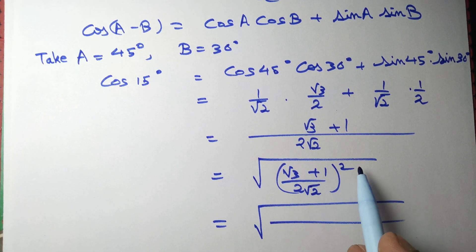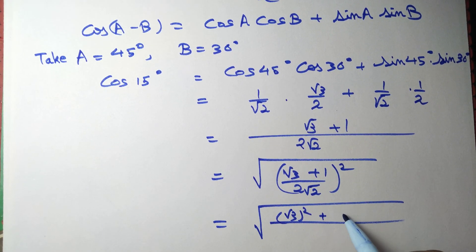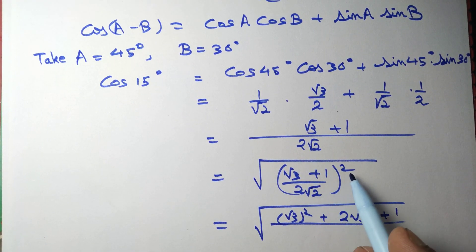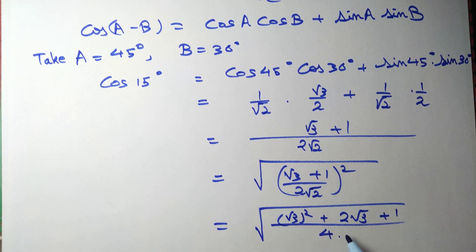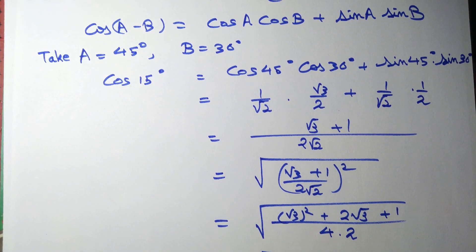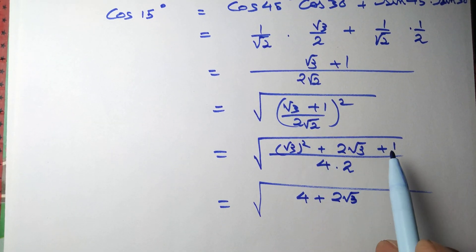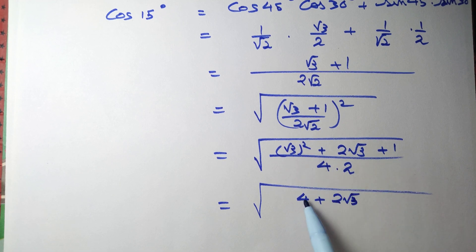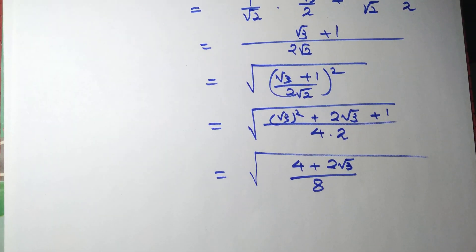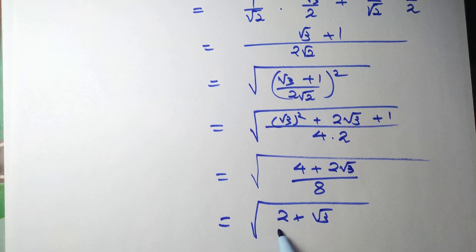Using (a+b)² = a² + 2ab + b², we get (√3)² + 2√3 + 1 divided by (2√2)². Since 2² = 4 and (√2)² = 2, that's 8 in the denominator. (√3)² = 3, and 3 + 1 = 4, so (4 + 2√3)/8. Factoring out 2 gives (2 + √3)/4.